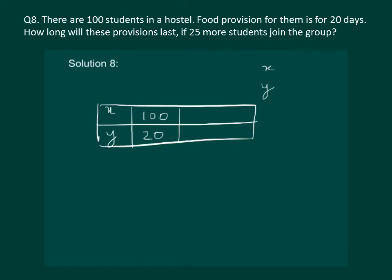But if 25 more students join that means students will be 125 then we have to find that for how many days it will last. Let us denote it by y2.